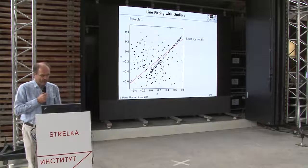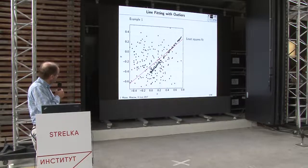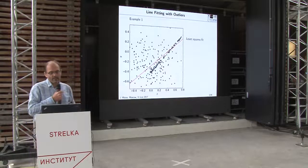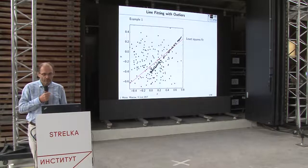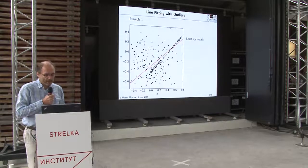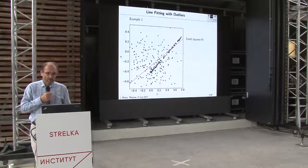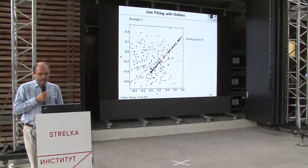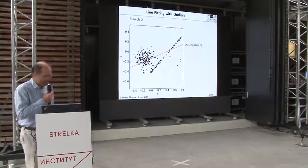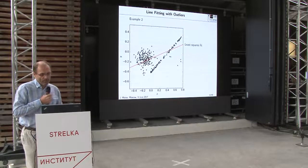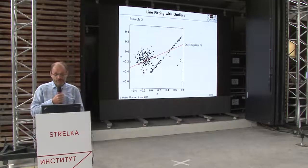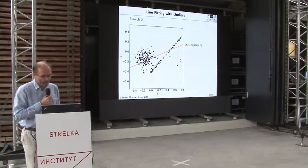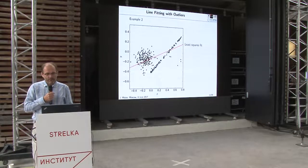As soon as outliers enter the game — for example, points generated from a line plus outliers roughly uniformly distributed inside a square — the least squares fit gives an incorrect and potentially arbitrarily wrong solution. With structured outliers, the least squares fit is useless and we have to reformulate the problem.